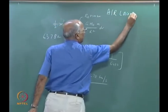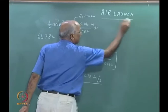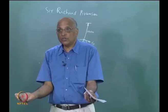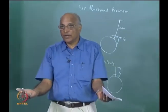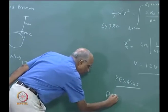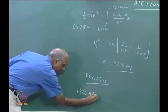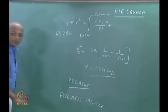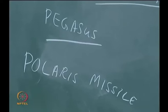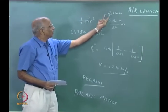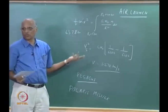A rocket need not always be launched from the ground - it can also be launched from under the sea. We have sea launch, we have something known as a Polaris missile which is launched from a submarine, maybe from under the water - it comes up and goes. Wherever we want, all what we need is the starting and ending orbital radius, and we can find out the velocity that is required. This is all what we learn in orbital velocities.